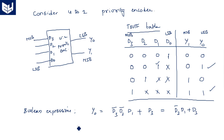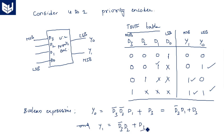Similarly, Y1 is activated in two cases: D3̄·D2 plus D3. Applying the same simplification A̅B + A = B + A, this reduces to simply D2 + D3.